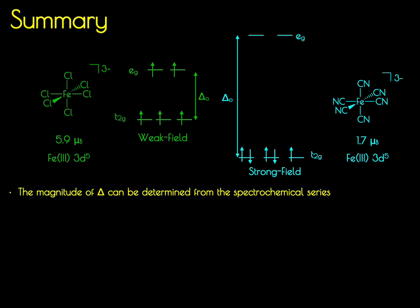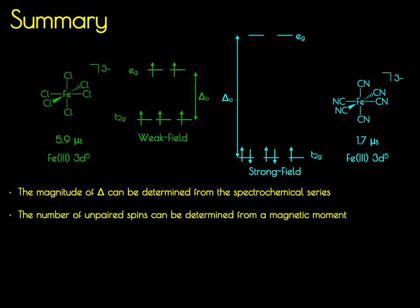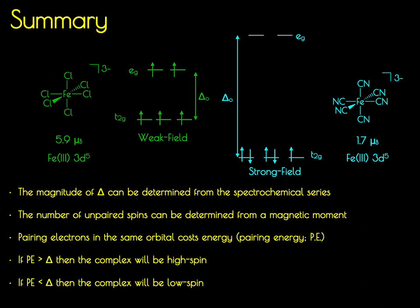To summarize: the relative magnitude of Δ can be determined from the spectrochemical series, either in terms of a ligand or a metal. You can use the magnetic moment of a molecule to determine the number of unpaired electrons it has, and then rationalize that number by considering the pairing energy relative to ΔO. If the pairing energy is large relative to ΔO, the complex will be high spin. If the pairing energy is small relative to ΔO, the complex will be low spin. In the next video, we're going to look at something called crystal field stabilization energy and try to rationalize some reaction kinetics based on it.